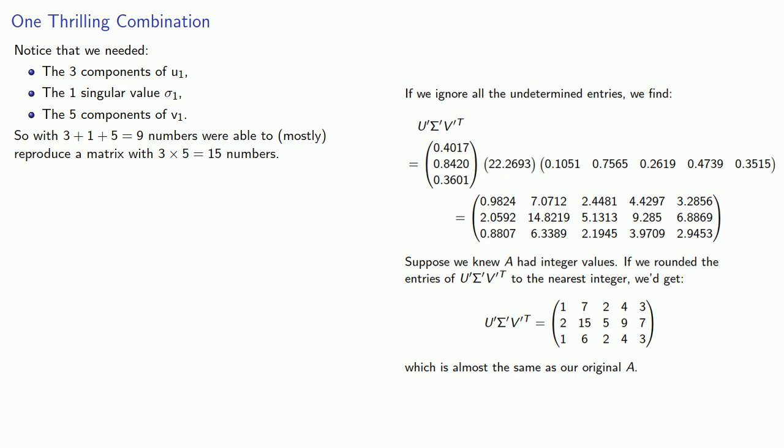Which means that with three plus one plus five, nine numbers, we were able to mostly reproduce a matrix with three times five, 15 numbers.